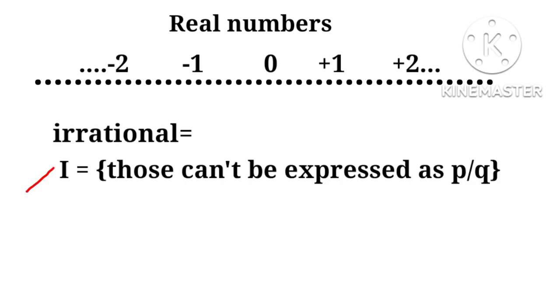So we define them as irrationals. I equals those numbers which can't be expressed as p upon q. For example, square root of 2, 3, and 5 are irrationals.